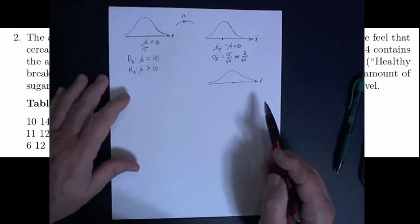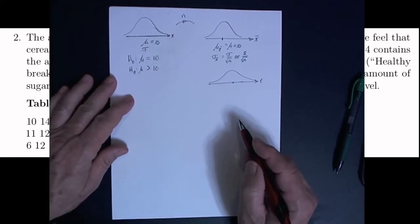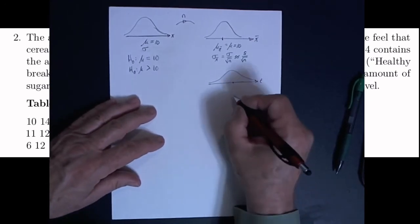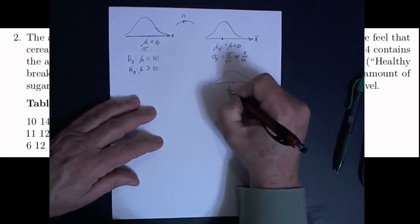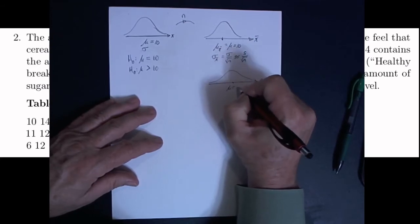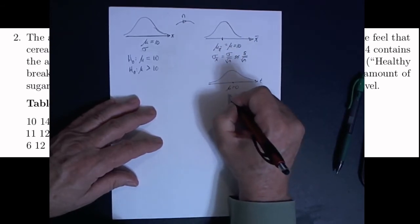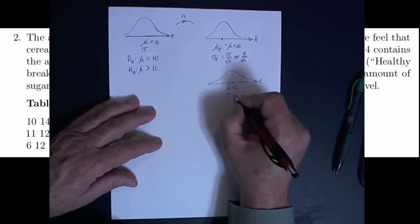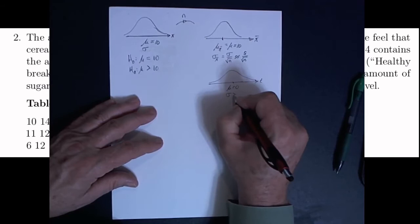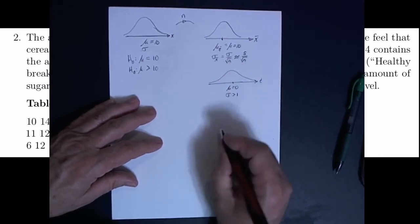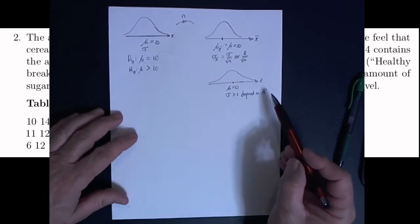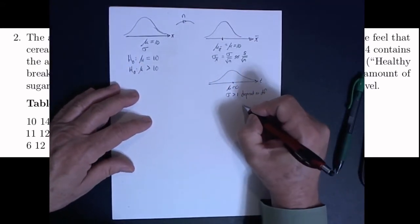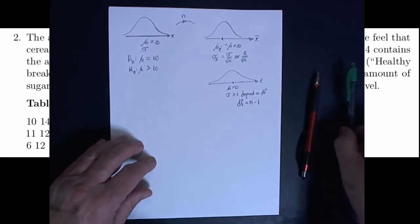So the third distribution in the three-distribution diagram is going to be a t-distribution. A t-distribution is much like a z-distribution — it has a mean equal to zero. Instead of having a standard deviation equal to one as with the z-distribution, it's going to have a standard deviation bigger than one. The degree of freedom in this chapter is always going to be n minus one.